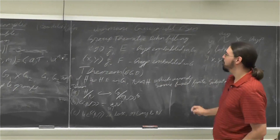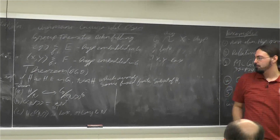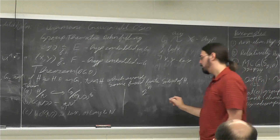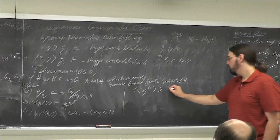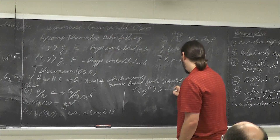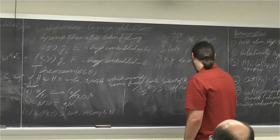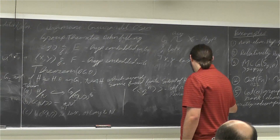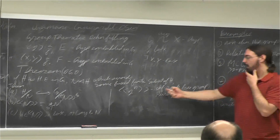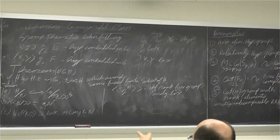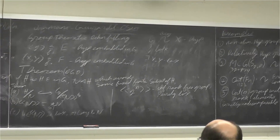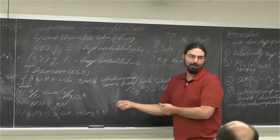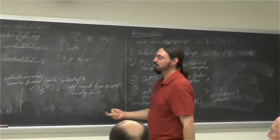Applying this theorem to the group E and looking at conditions B and C: for any loxodromic element g, I can take some high power to avoid the finite set and look at its normal closure in G. This is an infinite rank free group, and it's purely loxodromic — every element acts as a loxodromic isometry on X. The quotient is hyperbolically embedded, and is itself acylindrically hyperbolic.